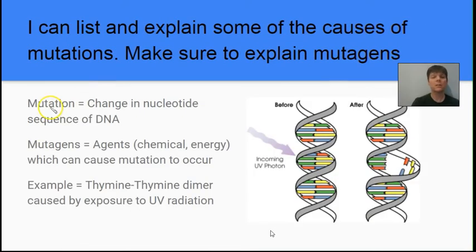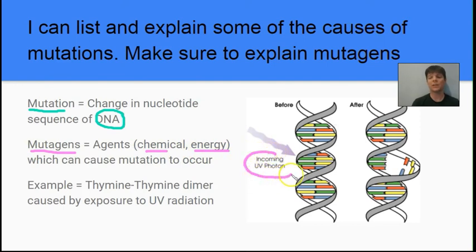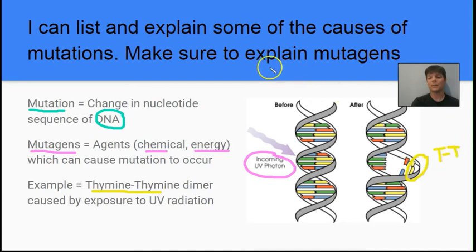Our next learning target is to list and explain some causes of mutations, discussing mutagens along the way. A mutation is a change in the nucleotide sequence of a DNA molecule — for example, ATGC might turn into AGGC — which can lead to changes in an RNA sequence that could change a protein. Mutagens are agents, either chemical or energy-based, that can cause a mutation. Ultraviolet radiation is an example of a mutagen. One possible mutation caused by UV light is the formation of a thymine-thymine dimer — UV light makes the DNA molecule unzip briefly, and neighboring thymines can cross-link to each other instead of linking back to the adenine they should pair with.